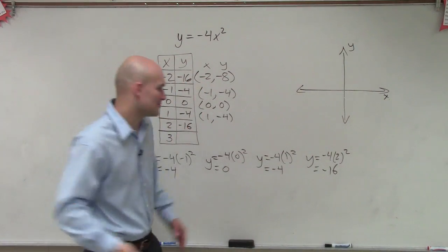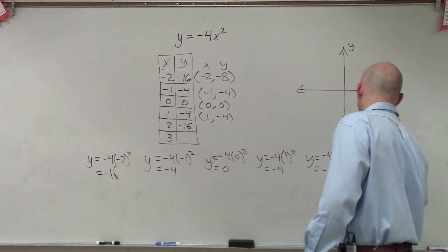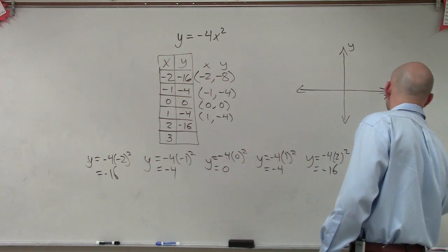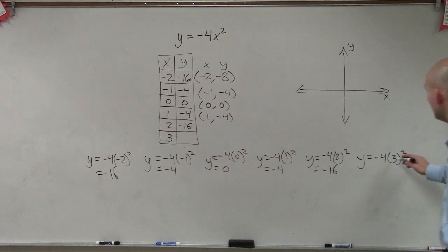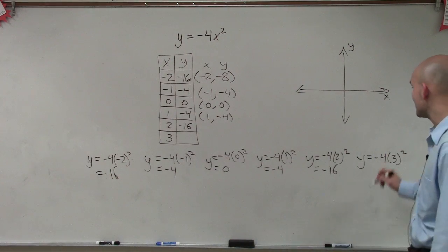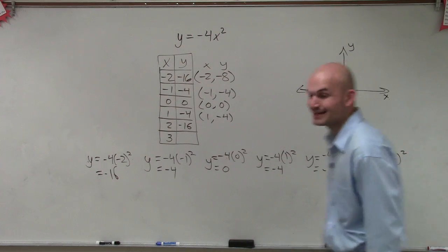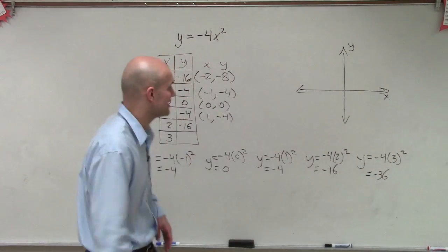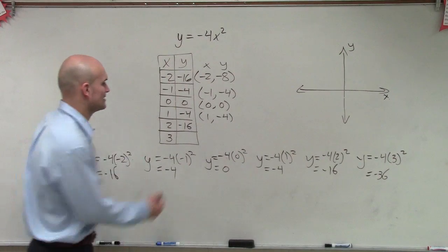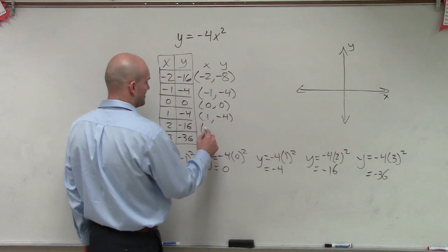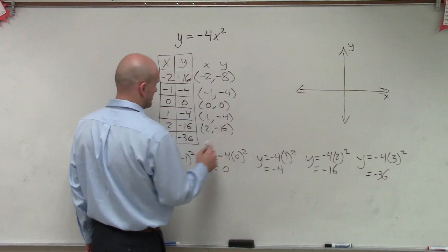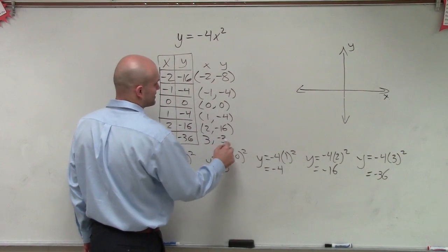And then let's just do 3, because why not? So I say y equals negative 4 times 3 squared. Well, 3 squared is 9. 9 times negative 4 is a negative 36. Now, I'm probably not going to get that far down on my quadratic, but what I can do is now plot these points. So therefore, I have 2 comma negative 16, and then 3 comma negative 36.